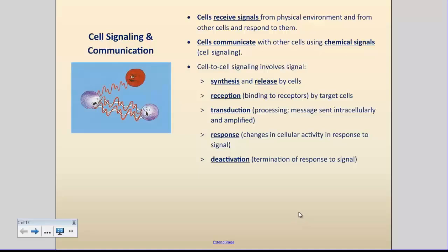Cells also can respond to physical signals from the outside environment, such as, for example, interacting or receiving signals such as light. So photo signals, or it could be sound signals, or it could be pressure signals from the outside.